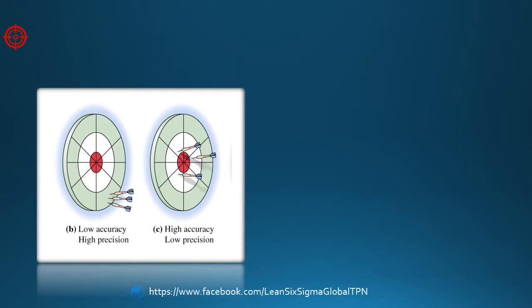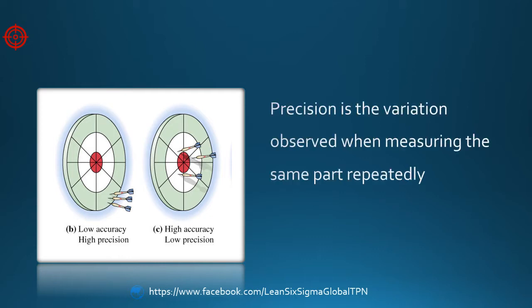To answer this question, we need to find out if the measurement tool is precise. Precision describes the variation observed when measuring the same part repeatedly with the same device. In other words, precision describes the spread of these repeated measurements. Less spread means more precision.